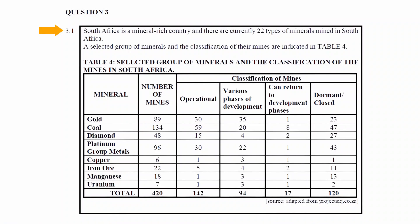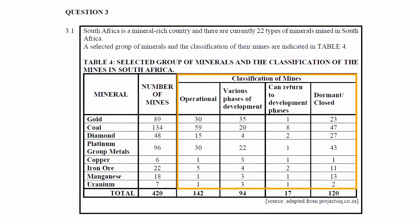Question 3.1 states that South Africa is a mineral-rich country and there are currently 22 types of minerals mined in South Africa. A selected group of minerals and the classification of their mines are indicated in Table 4. The first column lists the minerals mined in South Africa, and the second column lists the number of mines.